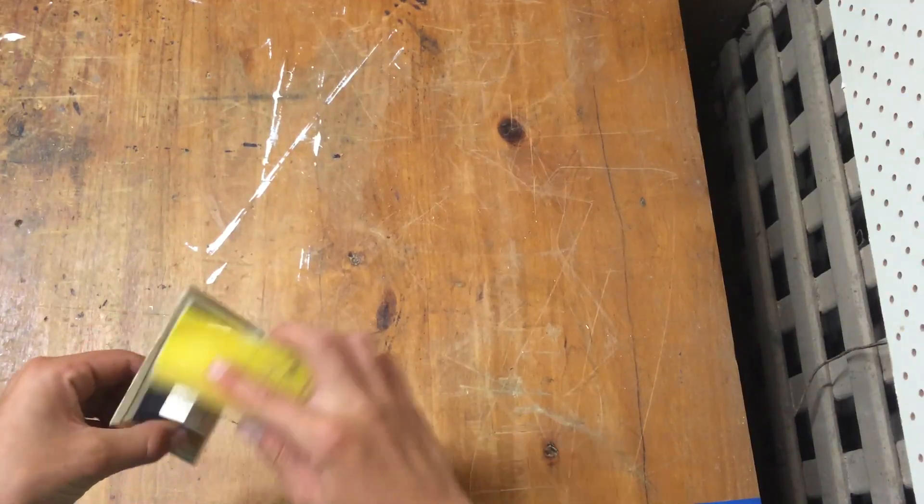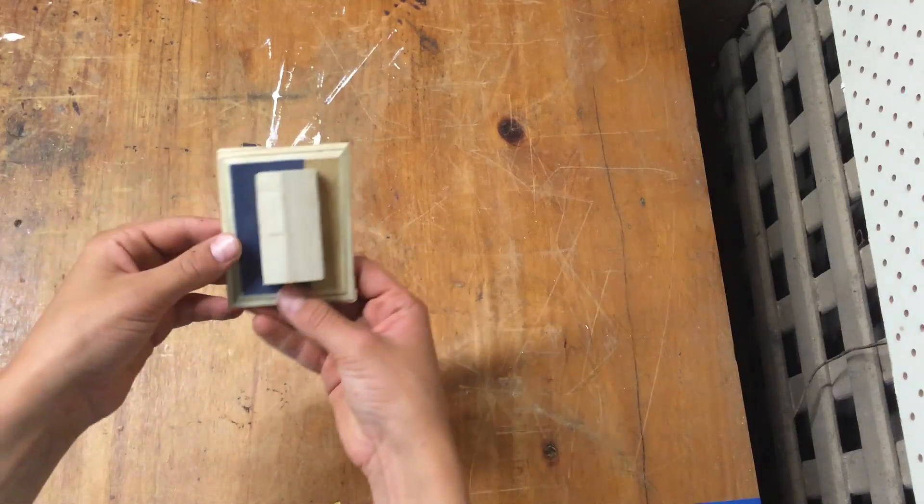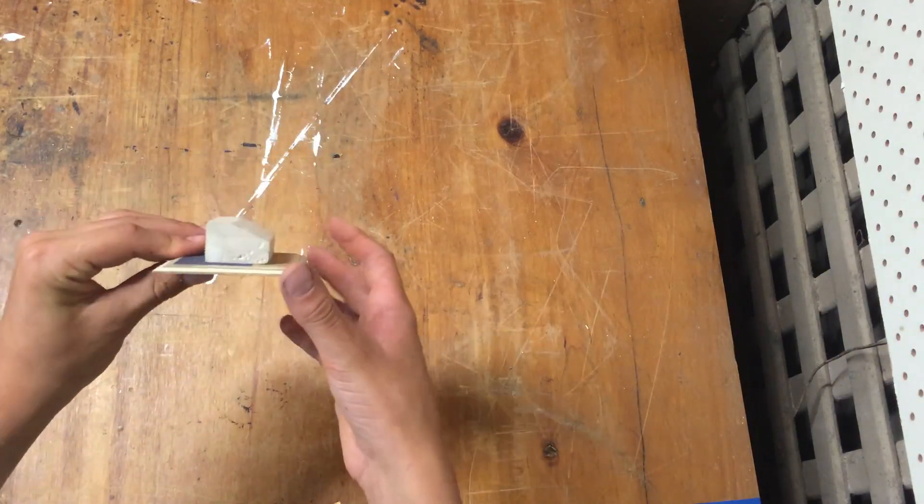Alright, so now that I've finished making the mold, I've placed it onto a piece of wood so that it's easier to pull out of the vacuum form.